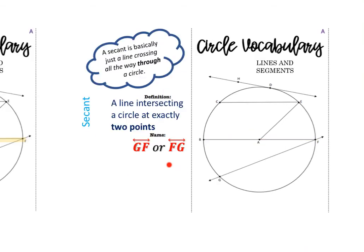The next word is secant. A secant is a line that crosses all the way through a circle — it slices a circle. The more precise definition is a line intersecting a circle at exactly two points. GF is a secant because it intersects the circle at two points: it intersects at G and at F. The order of the letters does not matter, so you could also say FG.